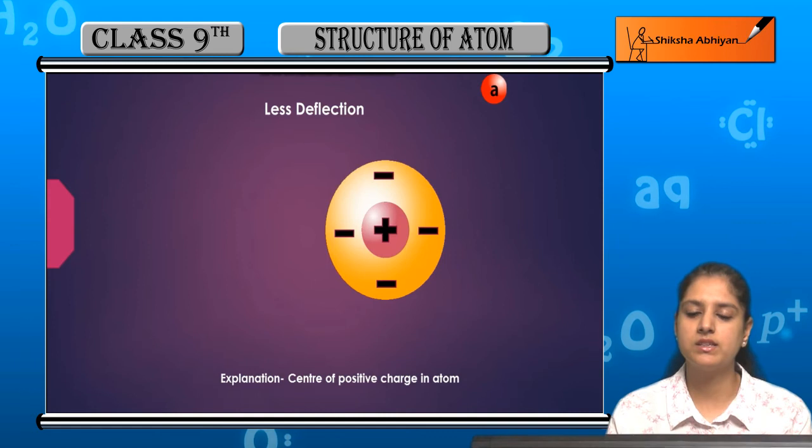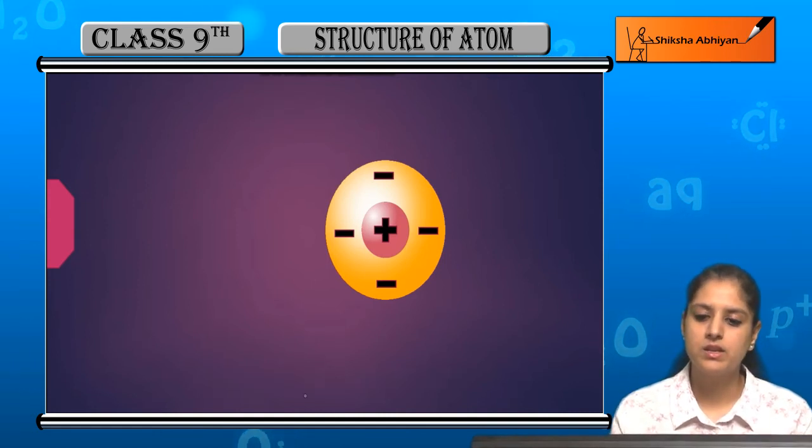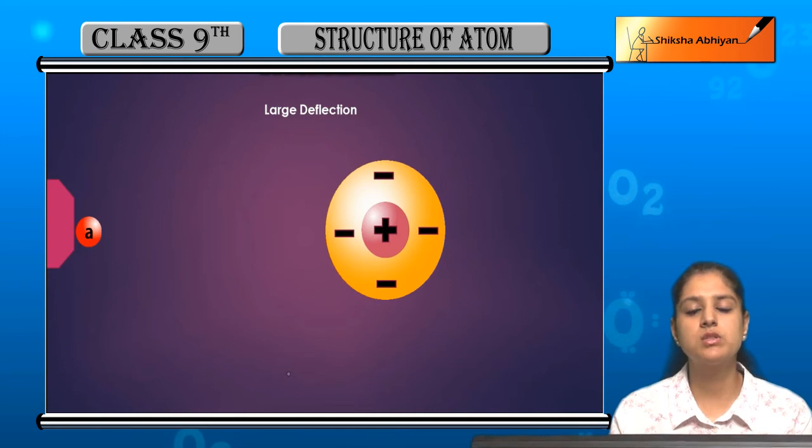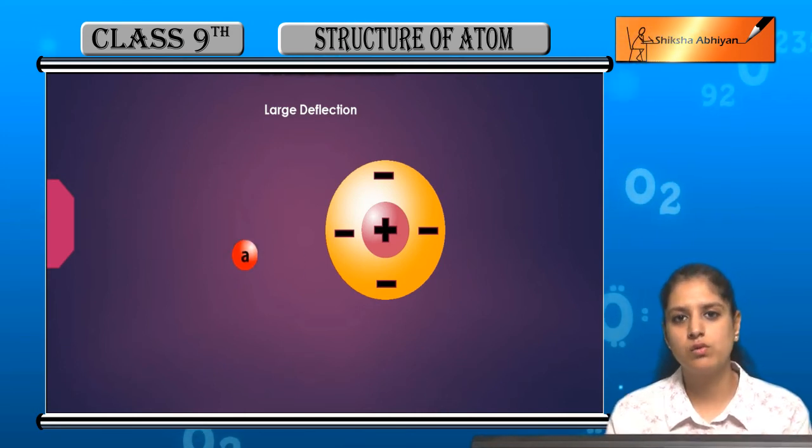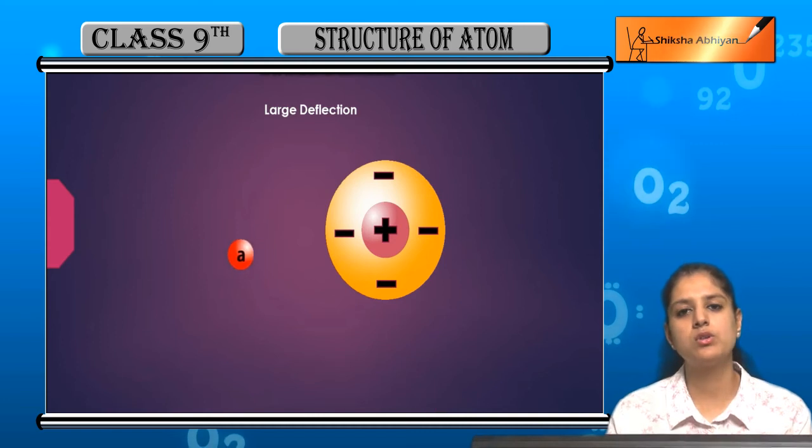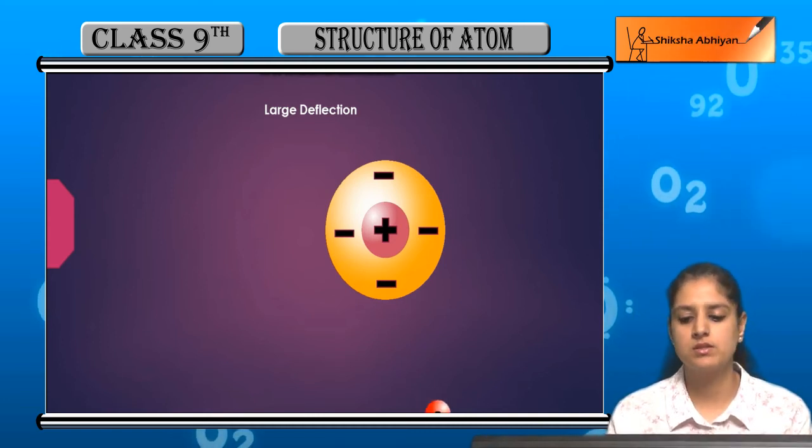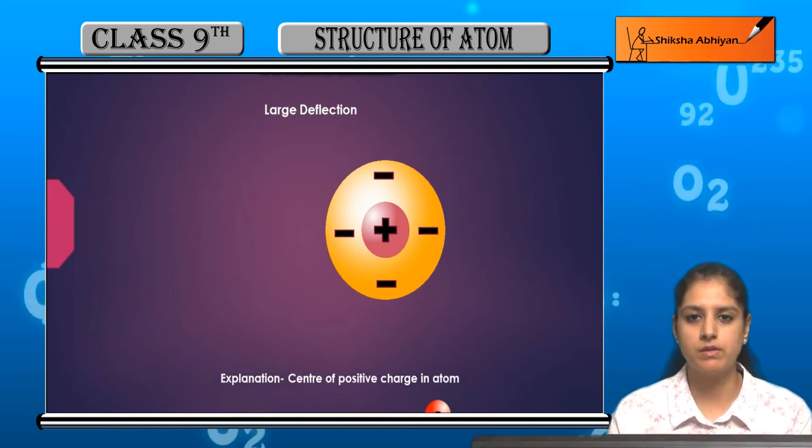This concluded that there is something positively charged inside the atom. The next type of deflection was large deflection. Large deflection occurs when alpha particles move very close to the positive charge, resulting in stronger repulsion and greater deflection. The reason is the same: the center of positive charge in the atom.